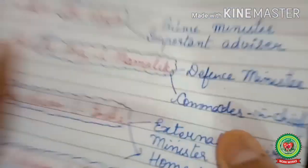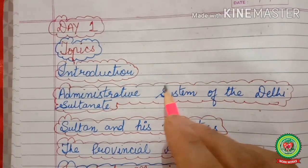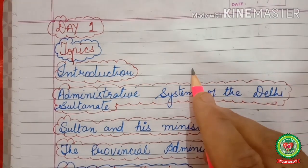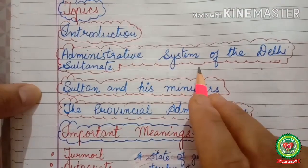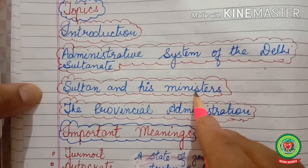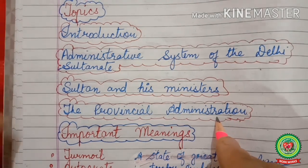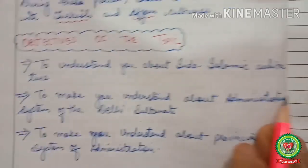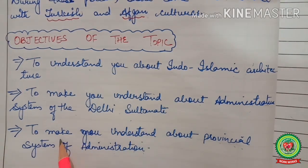Students, today is Day One. In this we will cover page numbers 58 and 59. The topics I am going to cover in this video are: introduction, administrative system of Delhi Sultanate, Sultan and his ministers, and the provincial administration. The objectives of today's topic are to understand Indo-Islamic architecture and the administrative system of Delhi Sultanate.